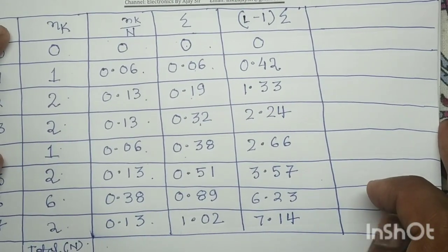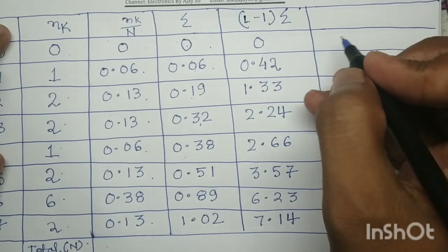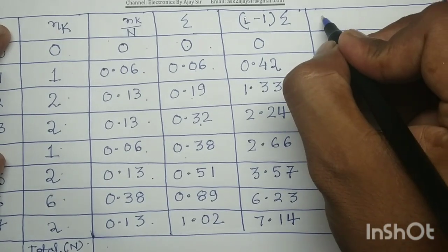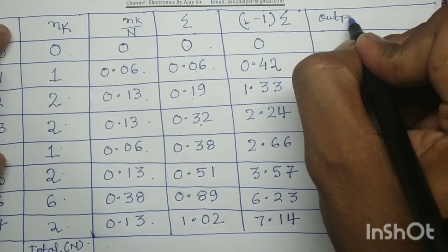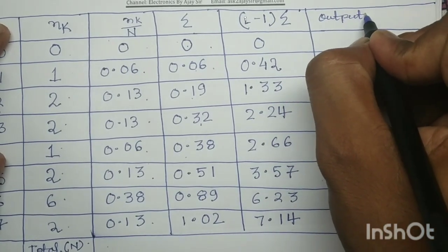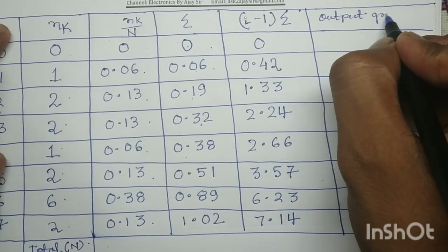In the last column, we write the output gray label by rounding each (L-1)×sigma value to the nearest integer.